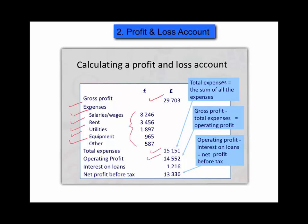The operating profit in this case is fourteen thousand five hundred and fifty-two pounds. If you've borrowed money from the bank, the interest — which is the cost of borrowing — will also need to be minused from your profit figure. So in this case we would take the one thousand two hundred and sixteen pounds away from our operating profit of £14,552.